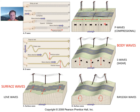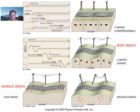P waves are compressional waves, moving back and forth, both squeezing and stretching the ground. As they compress the ground, they compress it, and as they go back the other way they cause a stretching — a compression and a dilation — kind of like a spring moving back and forth, compressing and expanding.